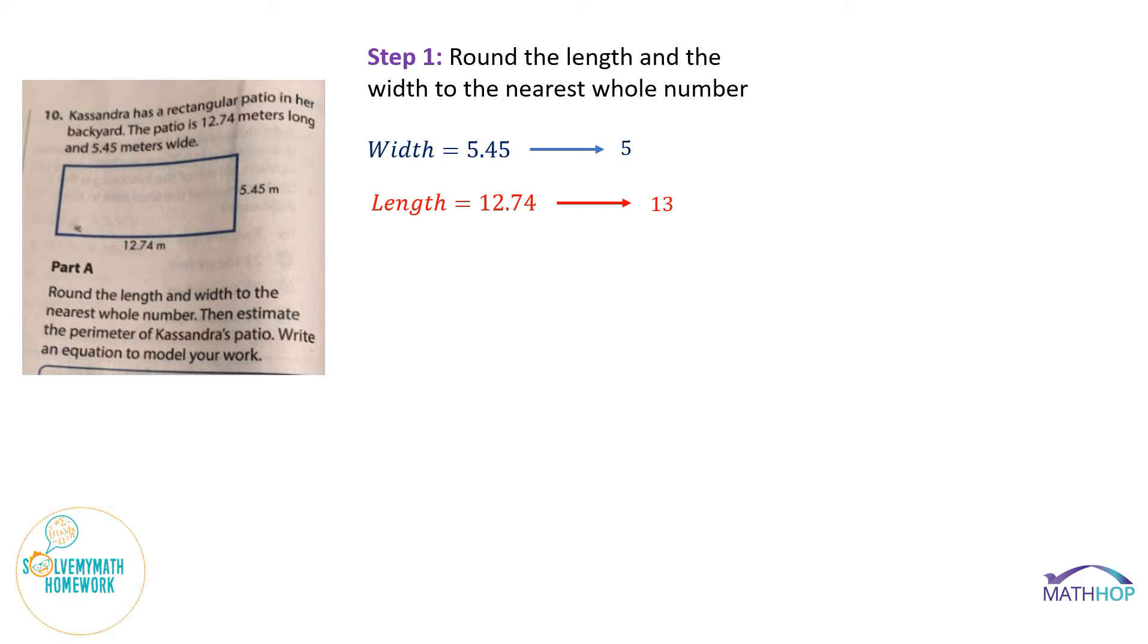Second step is remembering what perimeter is. Perimeter is the measurement around a figure. It is that linear measurement that goes around a figure. Picture taking some string and tracing it over the edge of a figure. That string, the length of that string, would be the perimeter of that figure. So how do we calculate that? Well, for a rectangle, it would be the length plus the width plus the other length plus the other width.